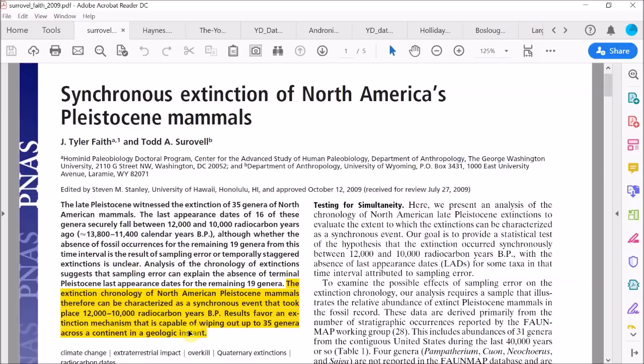Results favor an extinction mechanism that is capable of wiping out up to 35 genera across a continent in a geological instant. So it seems to me then that by the beginning of 2015, the Comet Research Group has practically proven their case.